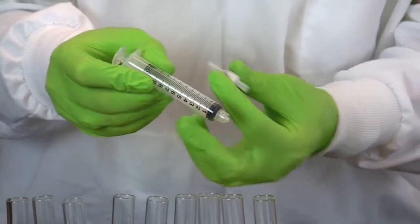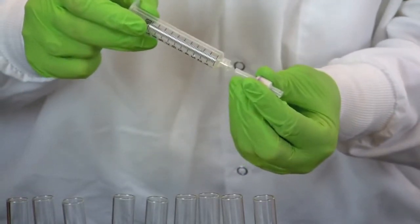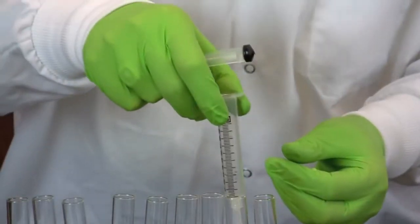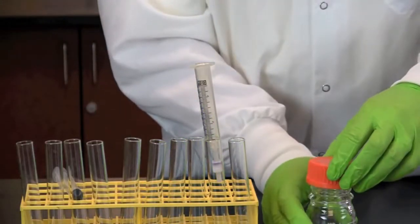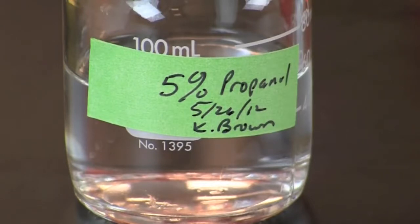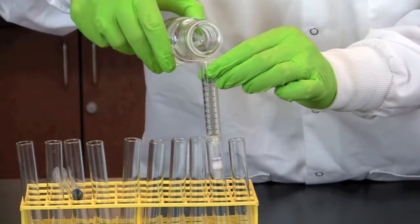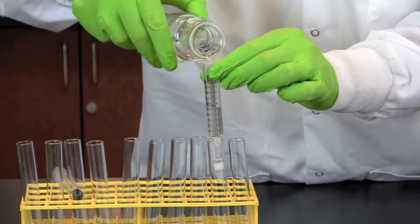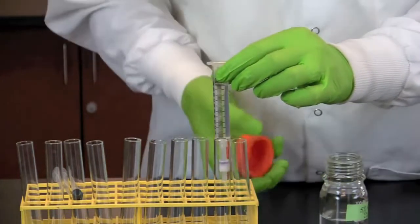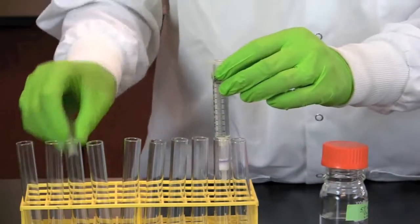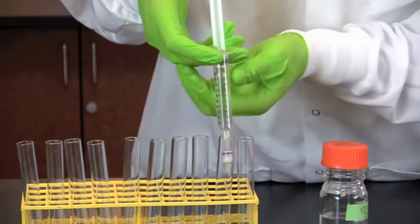Remove the cartridge from the syringe, pull out the plunger, and reattach the cartridge. Pour 10 ml of 5% 2-propanol into the syringe. Replace the plunger and push the alcohol through the cartridge. Collect the flow through in test tube number 2.